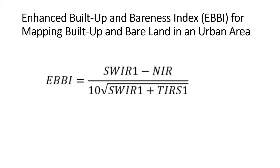Here you can see the equation for the Enhanced Buildup and Barrenness Index (EBBI) for mapping buildup and barren land in urban areas. Using this equation, we can easily calculate the EBBI and identify barren land and buildup area. In remote sensing, it's very difficult to distinguish buildup from barren land because their spectral signature values are almost the same. But by using the EBBI index, we can easily differentiate barren land and buildup area.